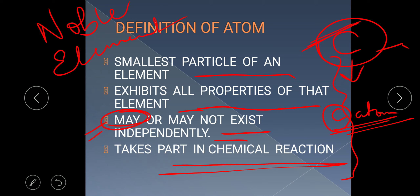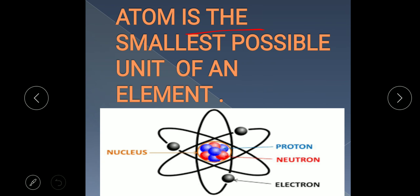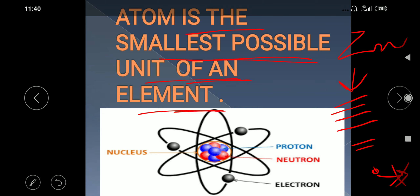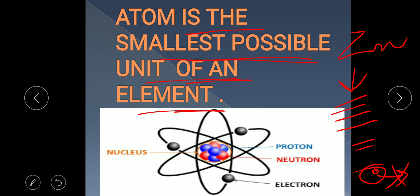An atom may or may not exist independently, but it takes part in chemical reactions. Atom is the smallest possible unit of an element. For example, if you take zinc and keep breaking it down into smaller and smaller pieces, a stage will come after which it cannot be further simplified — that is known as the zinc atom. This atom is composed of protons, neutrons, and electrons.